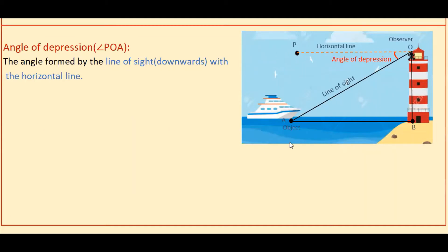If you see this figure here, the observer is at this place, this is a lighthouse, and this is a ship, so the observer is viewing the ship downwards. Here the line of sight is OA, going downwards. If you draw a horizontal line OP, the angle formed by the horizontal line to the line of sight is called angle of depression. So angle POA is called angle of depression — the angle formed by the line of sight downwards with the horizontal line.